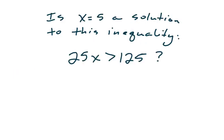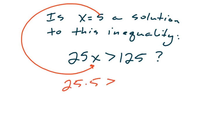Okay, let's take a look at this one. In this question, is x equals 5 a solution to this inequality? So what we have is 25x is greater than 125. So we take our 5 right here, and we plug it in with substitution, which makes us have 25 times 5 is greater than 125.